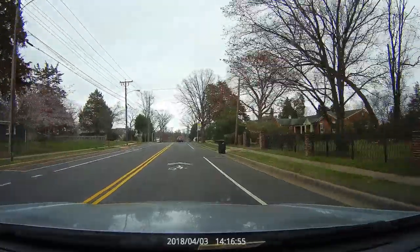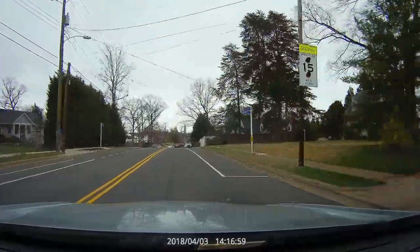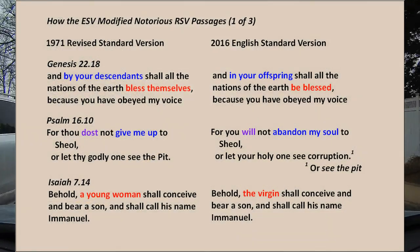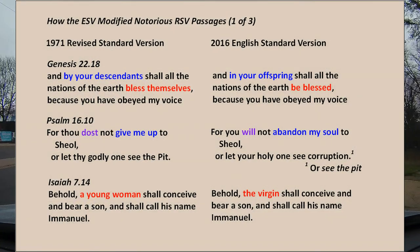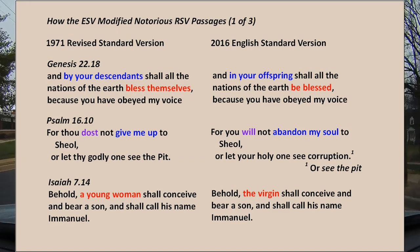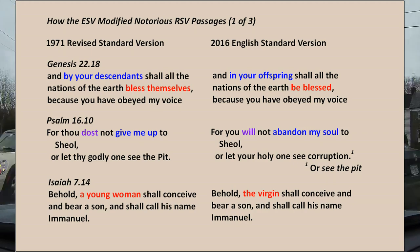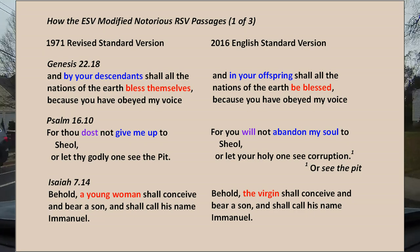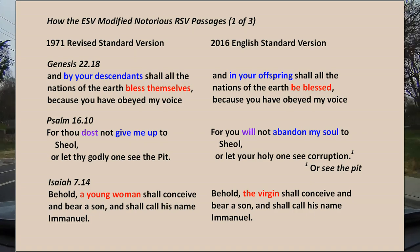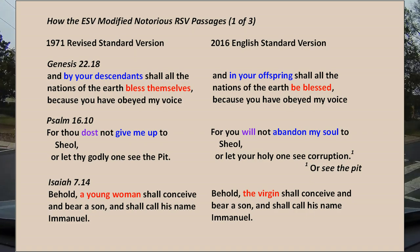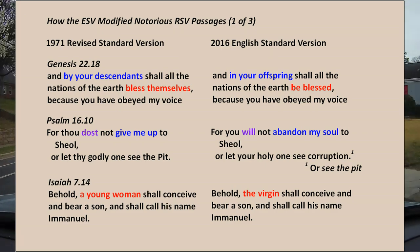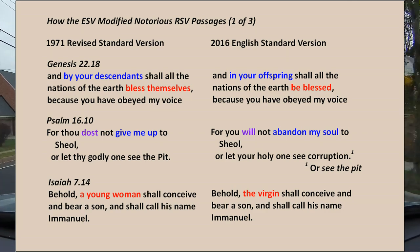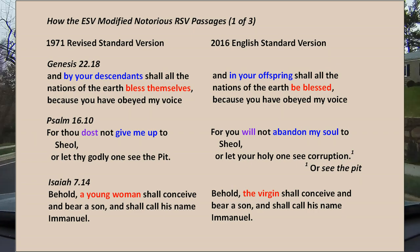We're now at our first chart, looking at some of the modifications to those notorious Revised Standard Version passages — the ones that raised everyone's ire. The first is Genesis 22:18, where the Revised Standard Version had said, 'by your descendants shall all the nations of the earth bless themselves.' The English Standard Version made that less offensive and more in keeping with the traditional understanding by replacing 'descendants' with 'offspring.' Descendants is clearly plural, while offspring could be singular or plural, and the singular understanding is more in keeping with Paul's message in Galatians 3.